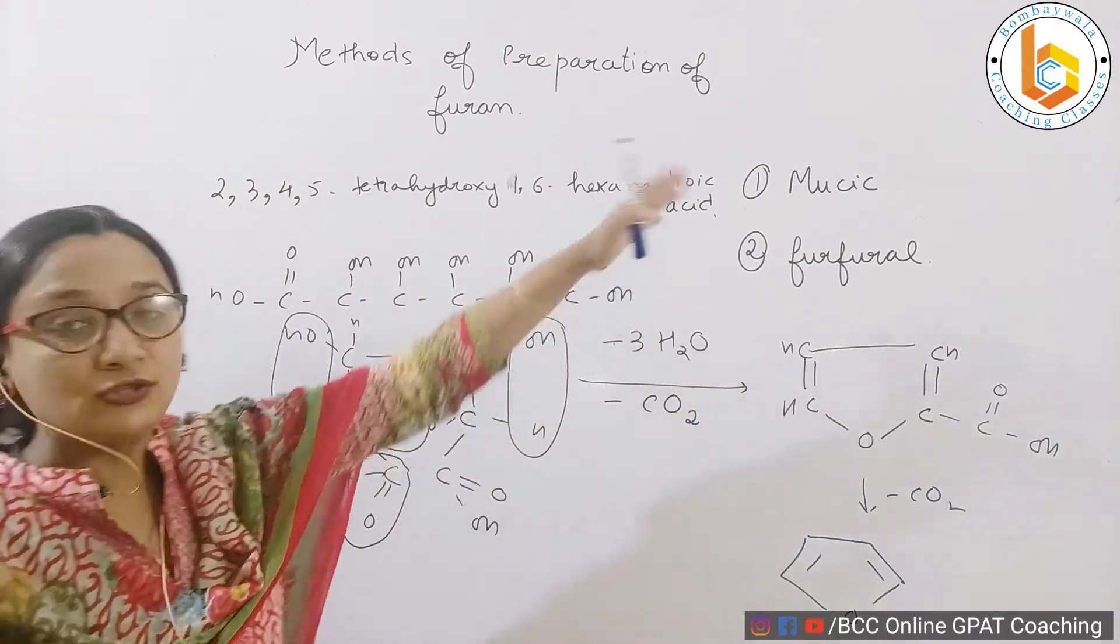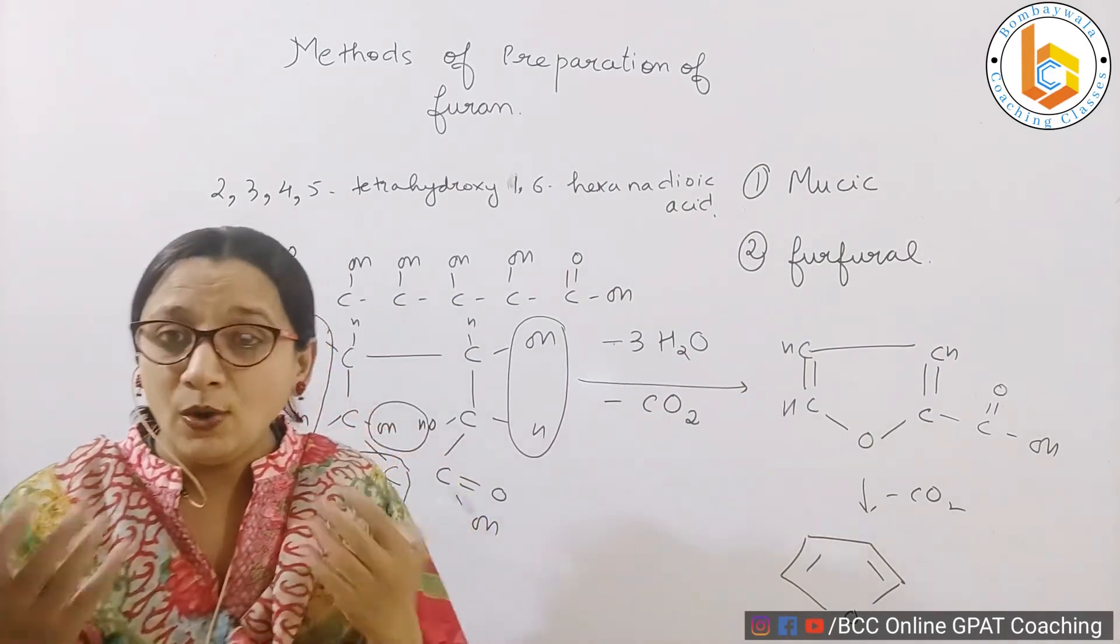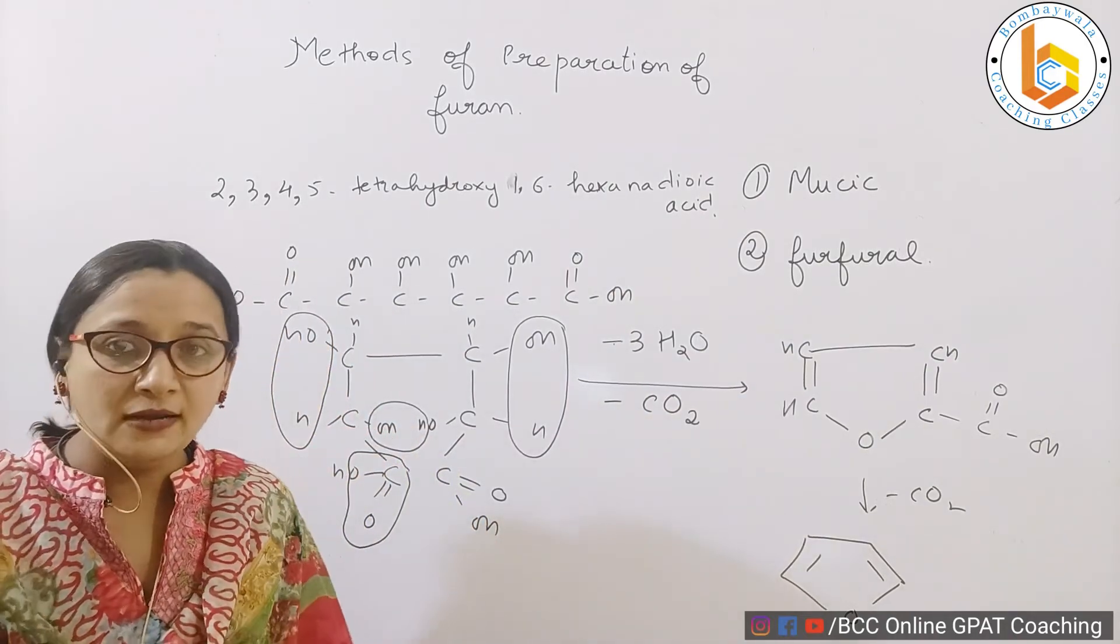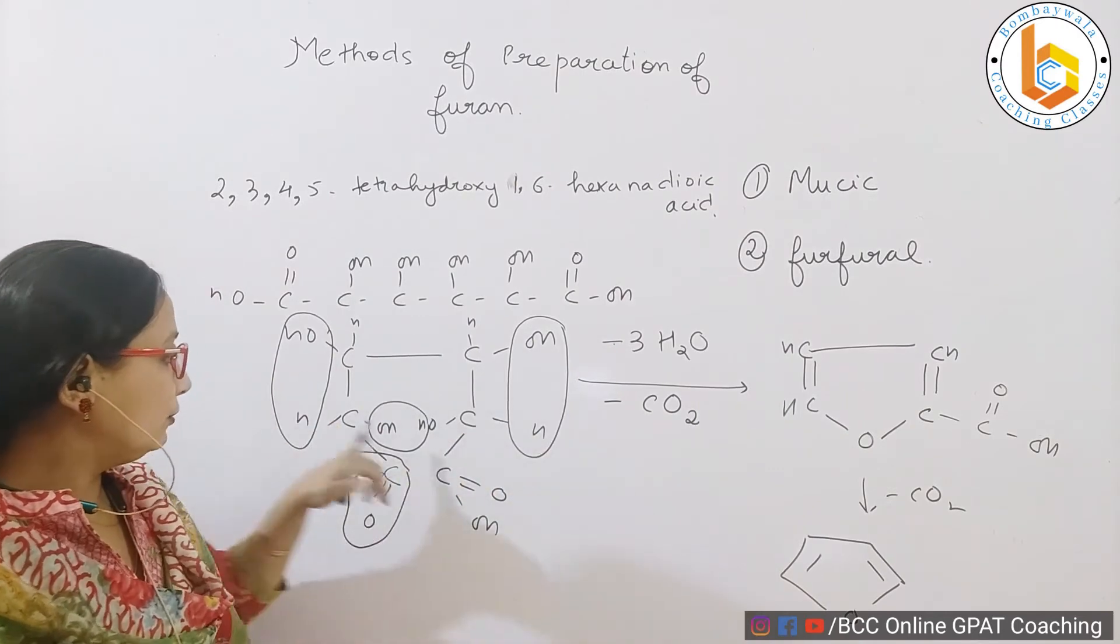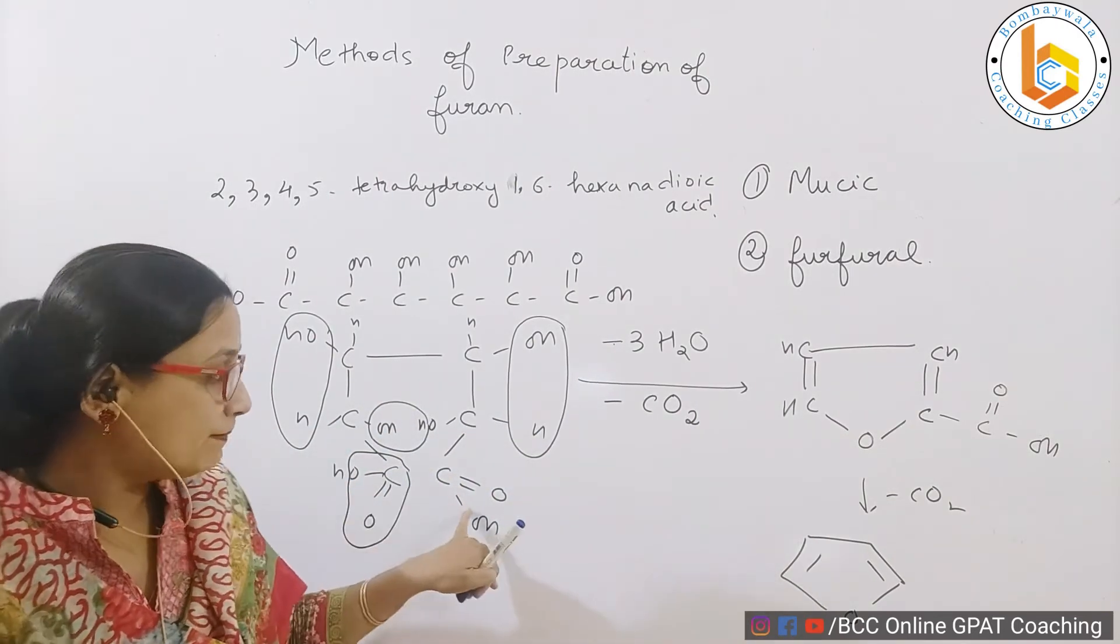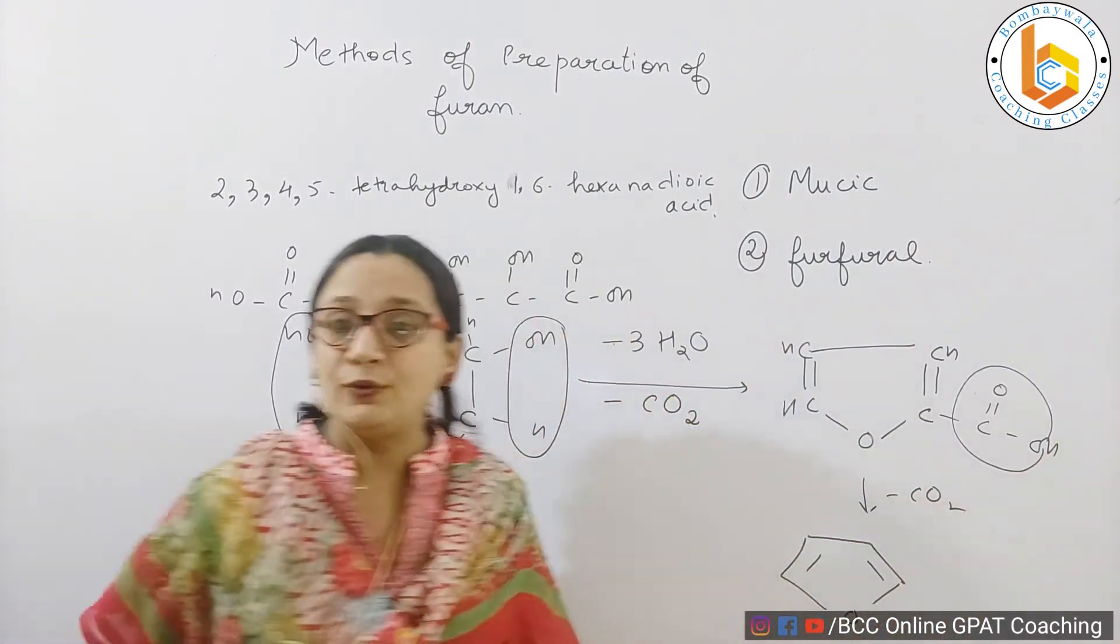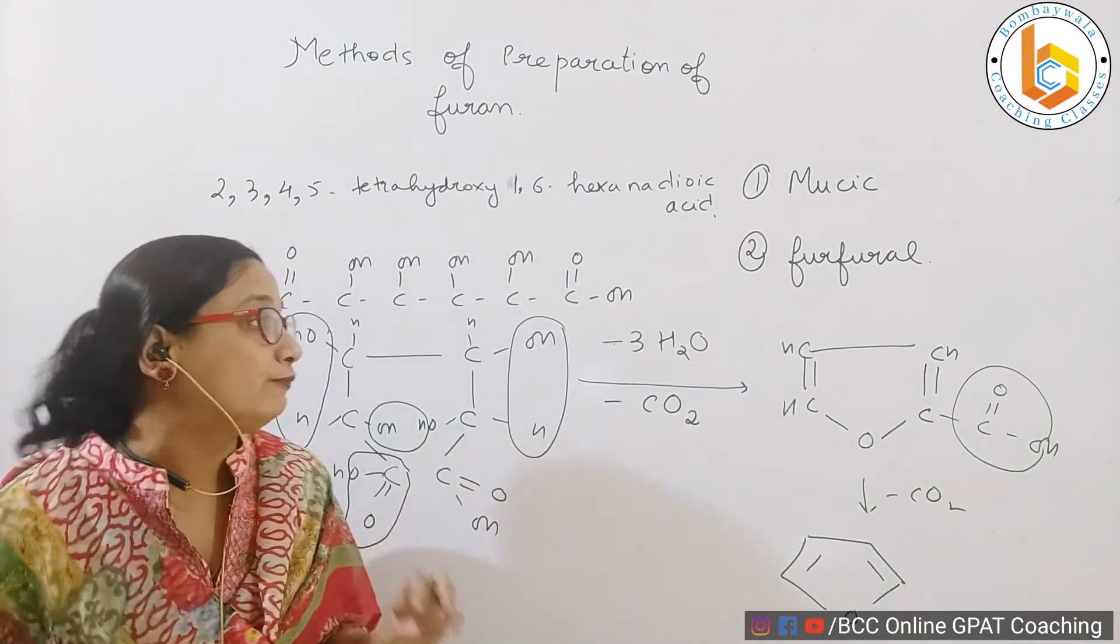So mucic acid, loss of three molecules of water and one molecule of carbon dioxide gives you furan. But how it happened? So that we understand, there is loss of three molecules of water and one molecule of carbon dioxide. And then the next step, another molecule of this carbon dioxide is lost, and what remains is a furan. This is the first method of preparation.